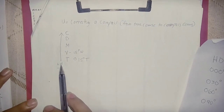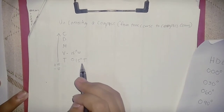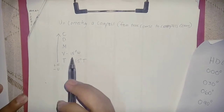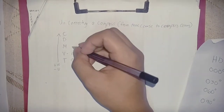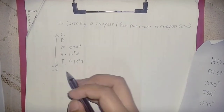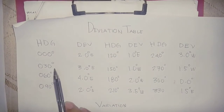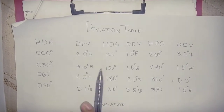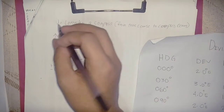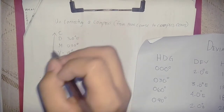Since we're going from true north, we add our variation: 015 degrees plus 15 degrees variation gives us a magnetic of 030 degrees. To get the deviation, we look at the deviation table — our heading is 030 degrees, so our deviation is 3.0 degrees. We copy that to our deviation column.